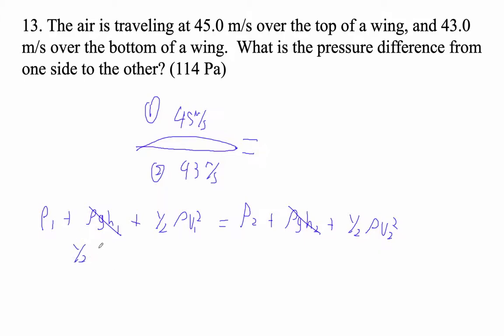And then I'm going to say that one half rho V1 squared minus one half rho V2 squared is equal to P2 minus P1. And this will be the pressure difference, right?